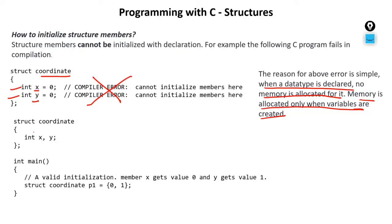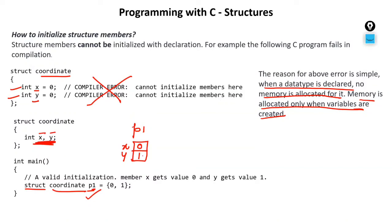The correct method is: first create the structure with members X and Y without initializing them, then inside main create a variable — 'struct coordinate P1' — and initialize it as P1 = {0, 1}. The moment you create this variable, memory is allocated with two parts for X and Y. The first part gets value 0 and the second gets value 1. This is the correct way to initialize structure members.